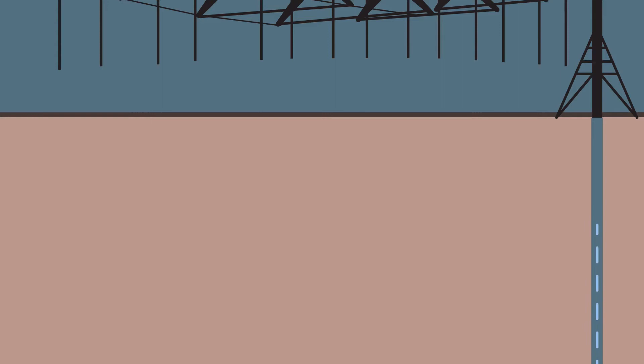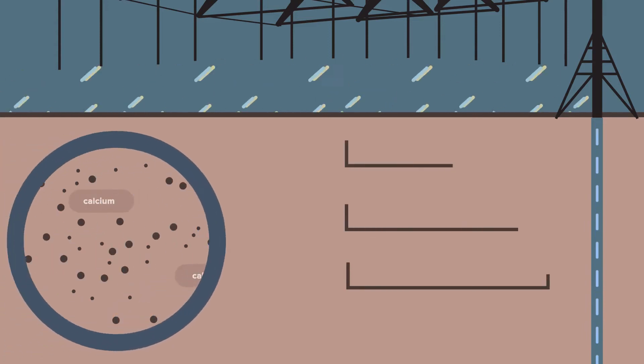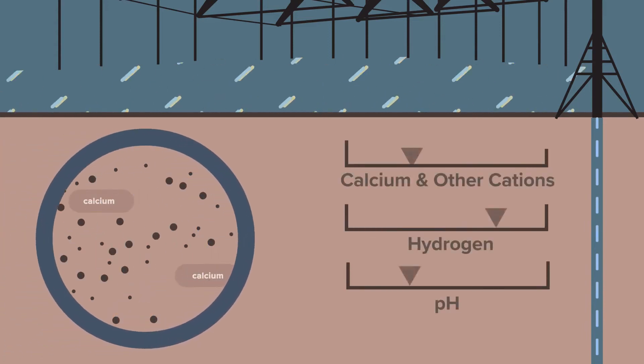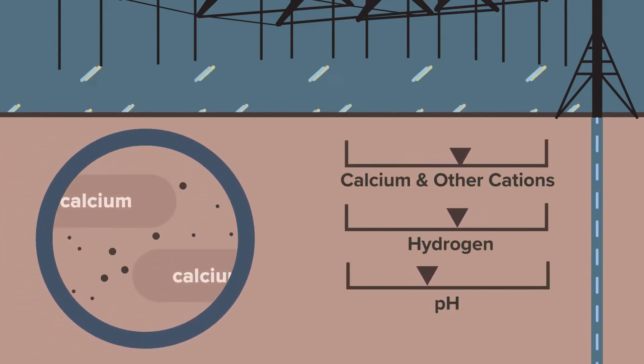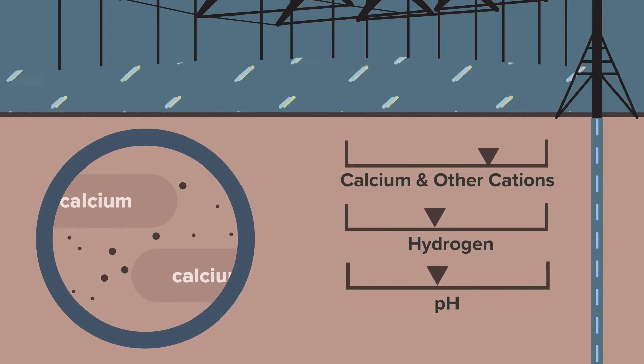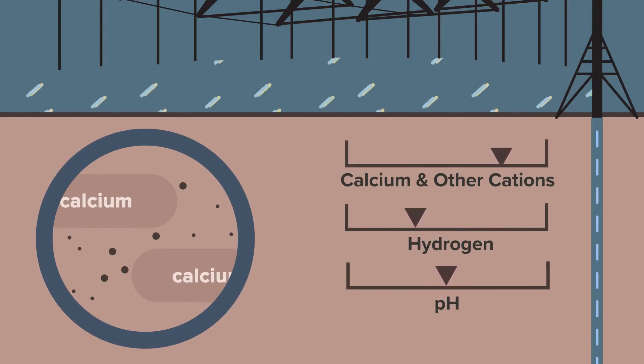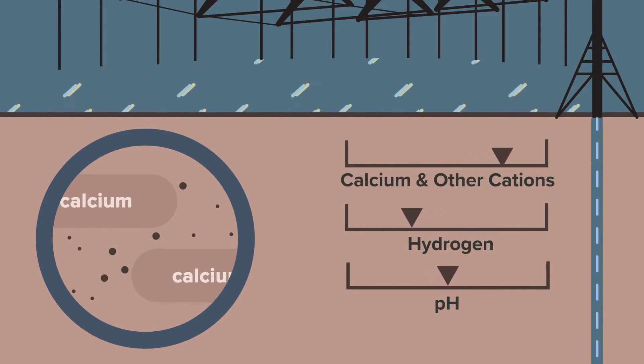A common question is whether irrigation water will have the same effect as rainfall in increasing hydrogen. In most cases, this is not going to be the case, because your irrigation water is adding other cations — such as calcium — that are going to offset the effect that hydrogen would be getting.